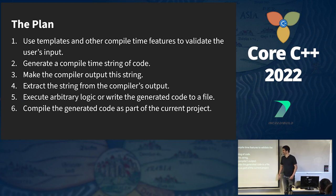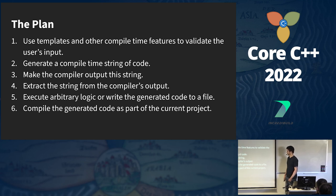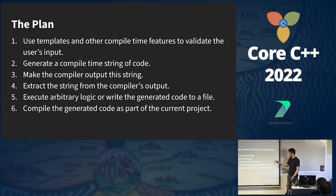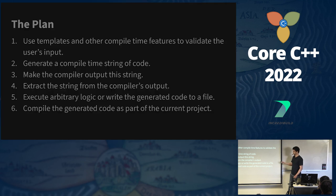The plan: first we will use templates and other compile-time features to validate the user's input, because we want a valid and clean interface, unlike with macros. Then we will generate a compile-time string of code, make the compiler output this string, extract the string from the compiler's output, execute arbitrary logic or write the generated code to a file, and finally compile the generated code as part of the current project.